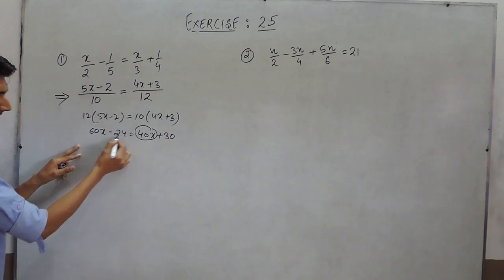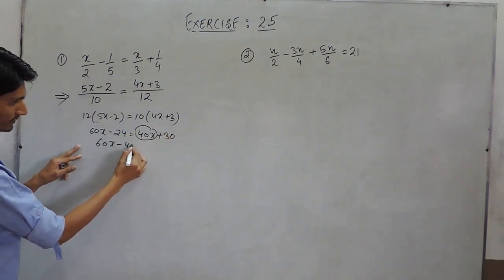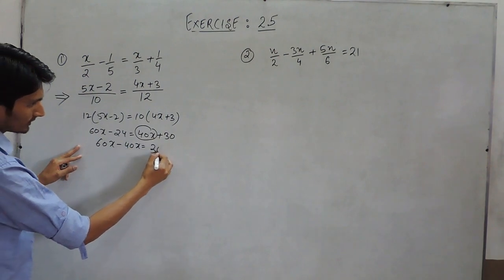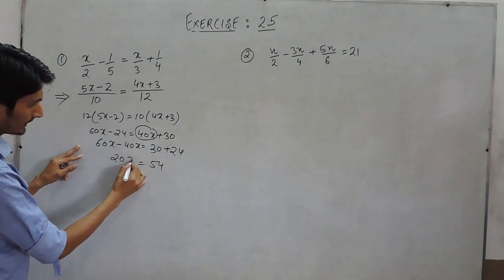We have to shift this variable to this side and this constant to the right side. This will give 60x minus 40x, and this would be 30 plus 24. This would be 54, this would be 20x.